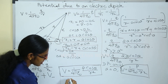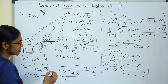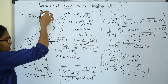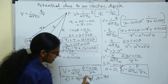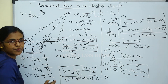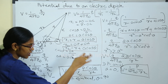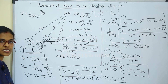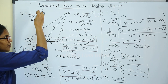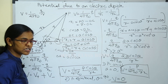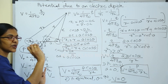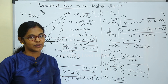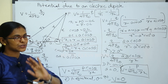Case 2: Point P is on the equatorial plane. When P is on the equatorial plane, theta is equal to 90 degrees. The value of cos 90 is equal to zero. Therefore, the electric potential due to an electric dipole on the equatorial plane is equal to zero.